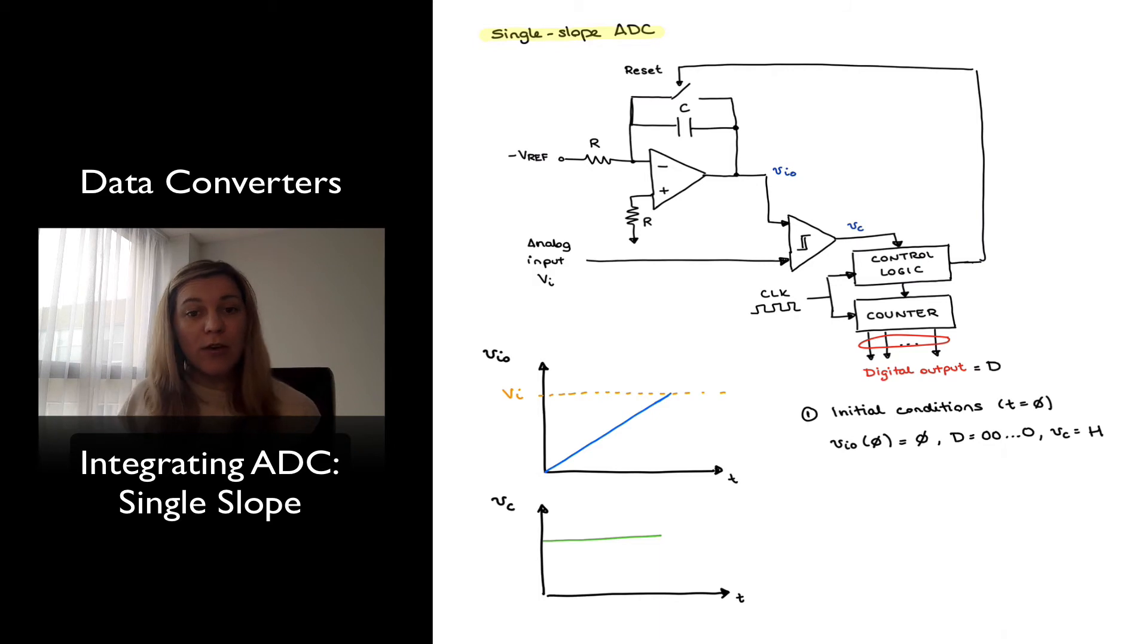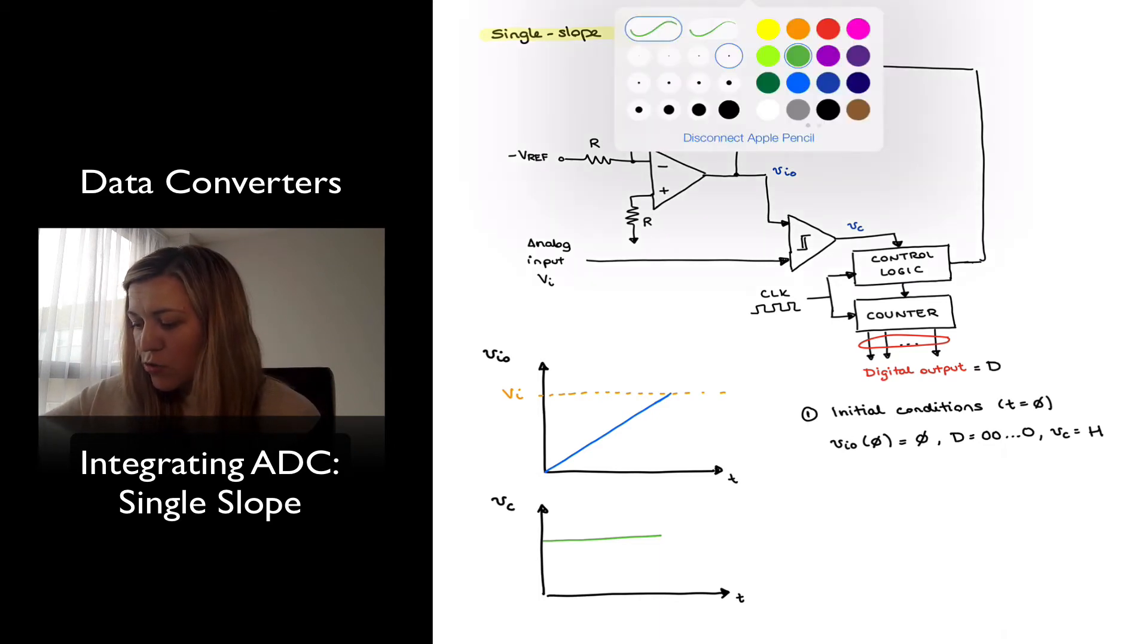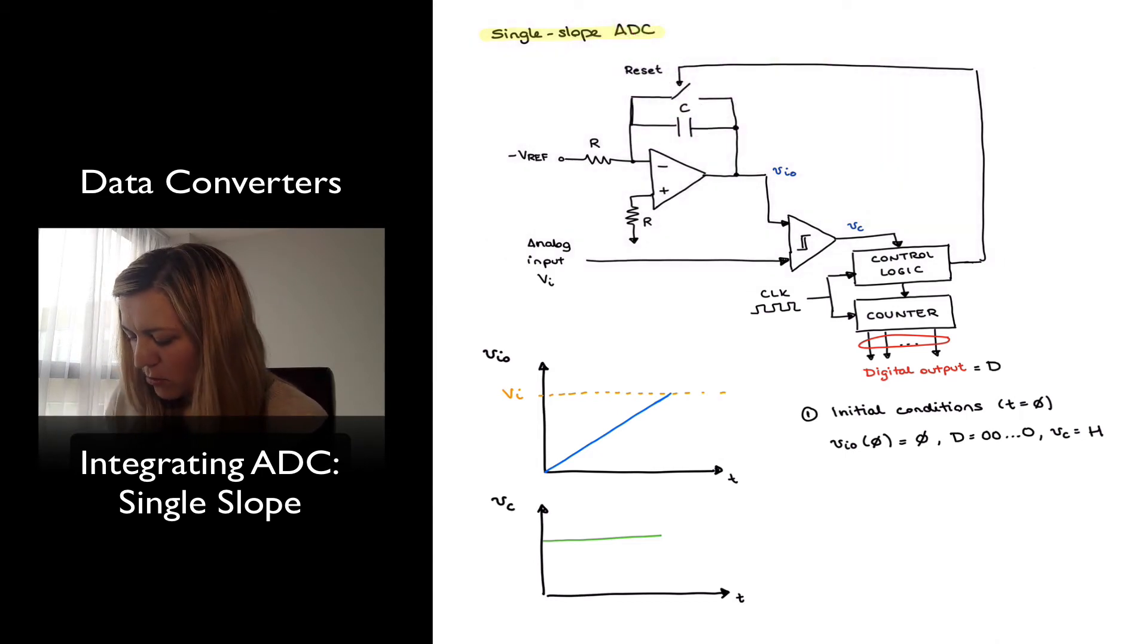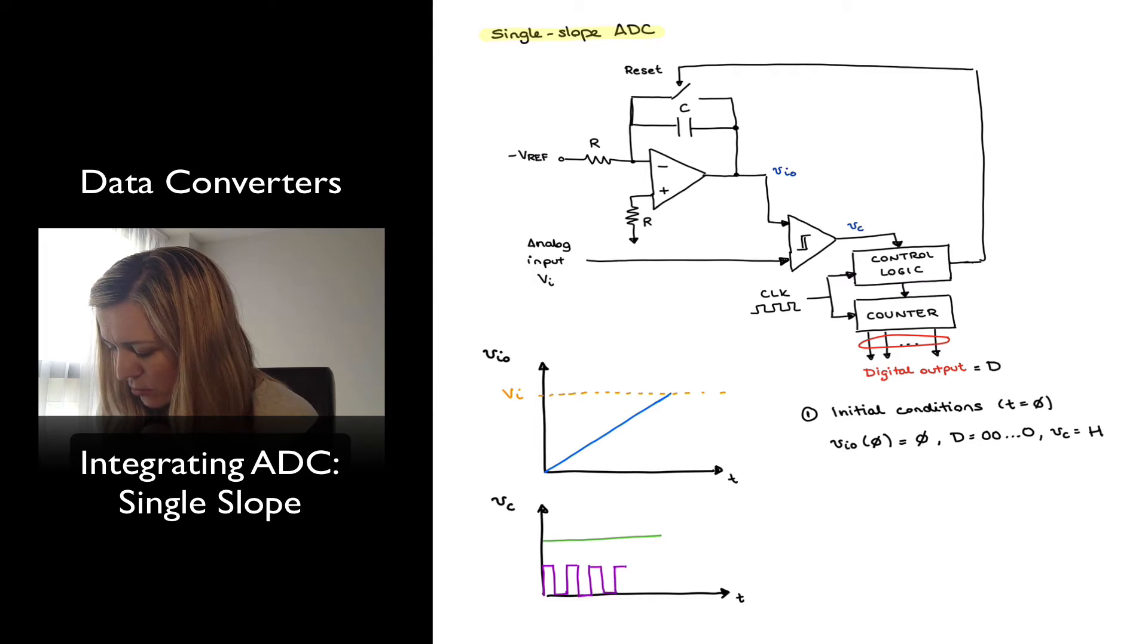My digital output was counting. So I have several clock cycles where my digital output is increasing. It increases by one LSB per clock cycle. If I represent my clock cycle, it's been counting all this time. One clock cycle, which corresponds to one LSB increasing my VI out. Another clock cycle, another LSB, another clock cycle, etc. So it's been counting up until the time where my VI out reaches the value of V in. At that point, which I'm going to label as T1.